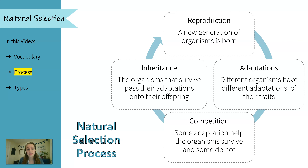And that's what we see. So the organisms that survive, because they have these traits, then pass their adaptations onto their offspring. And then the cycle would begin again. And eventually we're narrowing down to traits that help the population survive better and better and better.